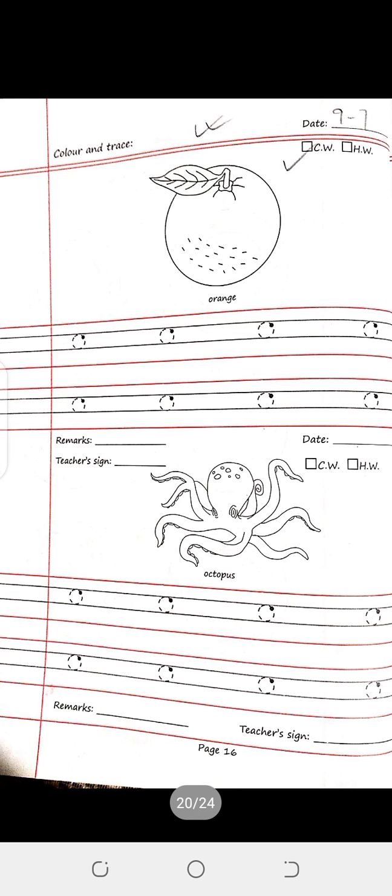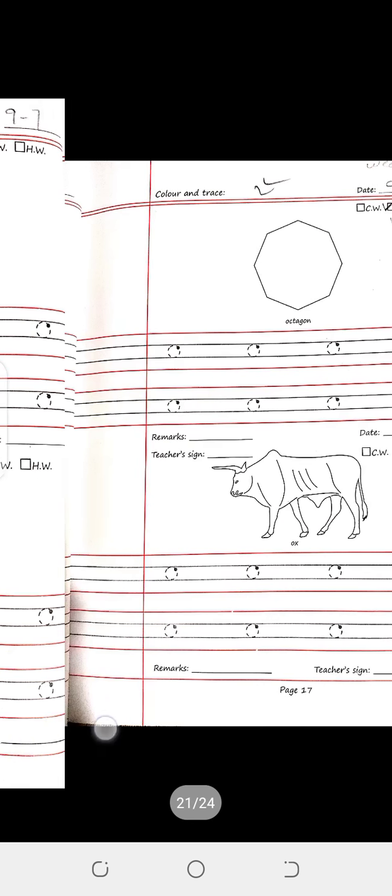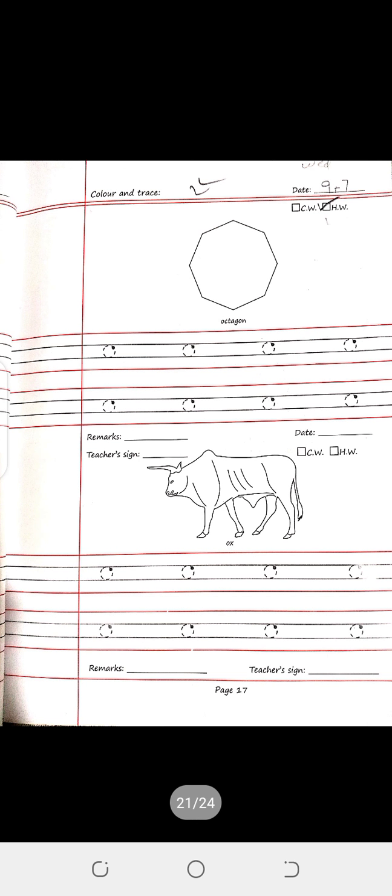Next, phonic practice copy, page number 16 — this is your classwork: orange, octopus, colour and trace. And page number 17 — this is your homework: colour and trace octagon and ox. And free hand colouring.